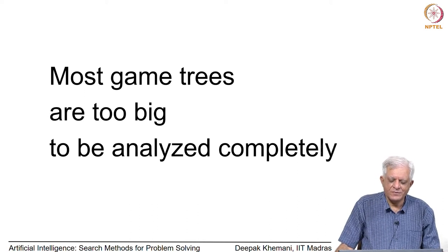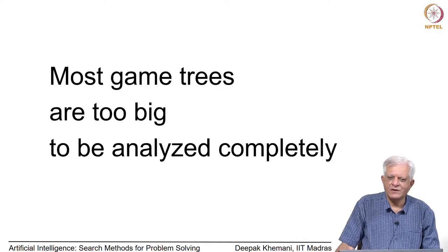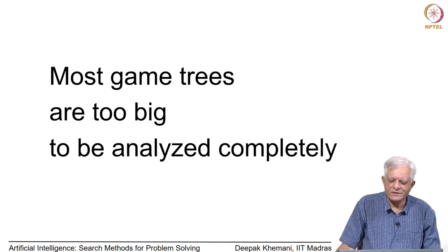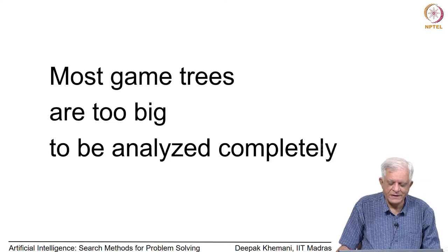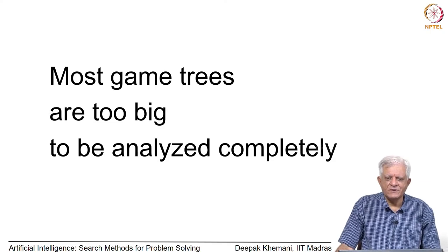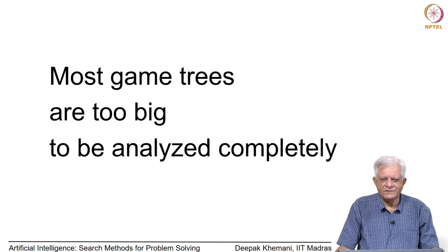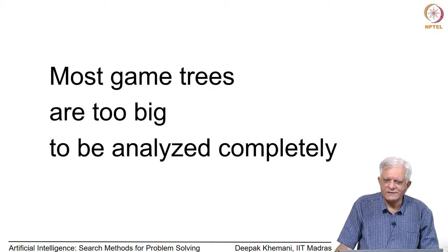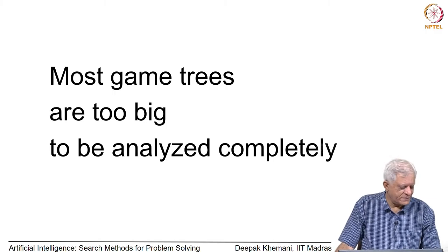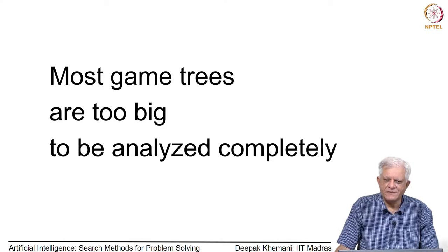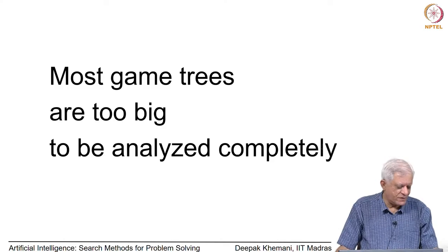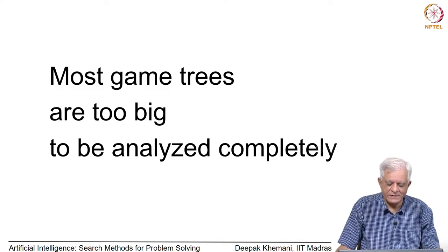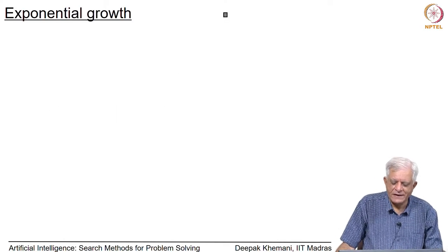We also made an observation that real games like chess and Go are too large to be analyzed completely, and as a consequence we do not know what the minimax value of a game like chess is. But if you want to write programs to play those games, we have to adopt some approaches where you do not have to analyze the complete game tree, and we do that by doing a finite look-ahead.